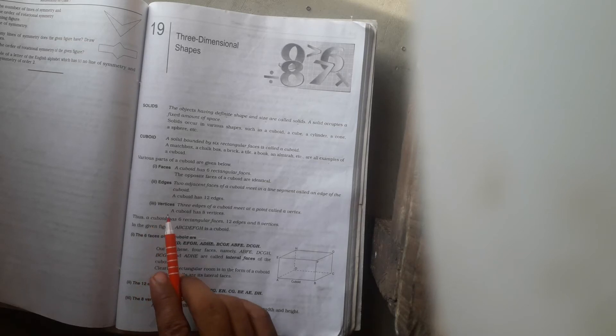In cuboid, there are 12 edges. And vertices: three edges of a cuboid meet at a point called a vertex. In a cuboid, there are eight vertices.